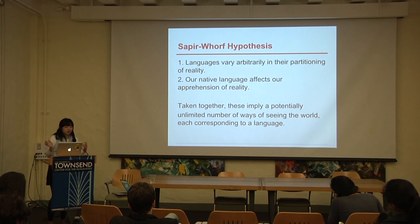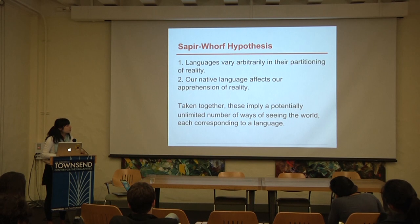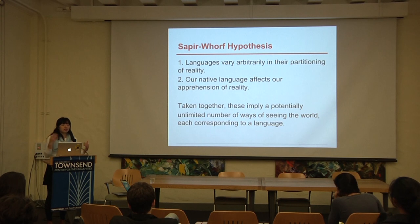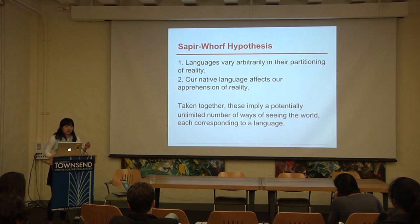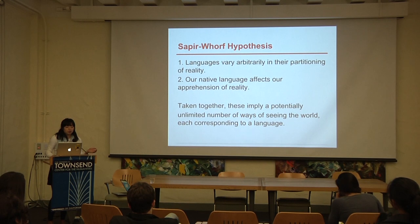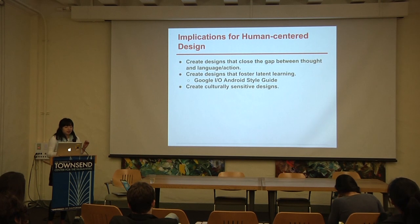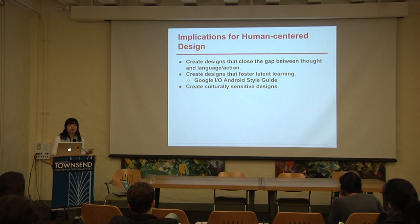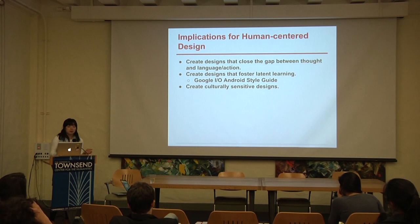Another influential concept from CogSci C1 is the Sapir-Whorf hypothesis: if you speak a different language, that will cause you to understand the world in a different way. Different cultures may perceive the world differently. The implication for human-centered design is that if we're designing for a different culture, we have to take that into account and understand the different cultural assumptions that people have.